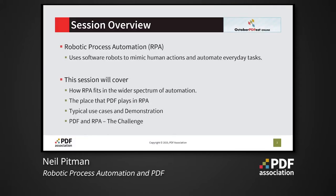Robotic process automation uses software robots to mimic human actions and automate everyday tasks. This session will explain the role that PDF plays in the range of automation solutions that may be classified as robotic process automation, and how RPA fits into the wider spectrum of automation. Use cases will be discussed and we will give a demonstration of RPA, with particular mention given to PDF-centric issues that need to be considered for successful RPA implementations.